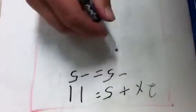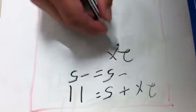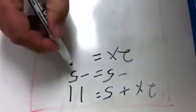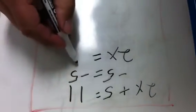So on the left side of the equation after we subtract 5 we get 2x. On the right side of the equation 11 minus 5 equals 6.